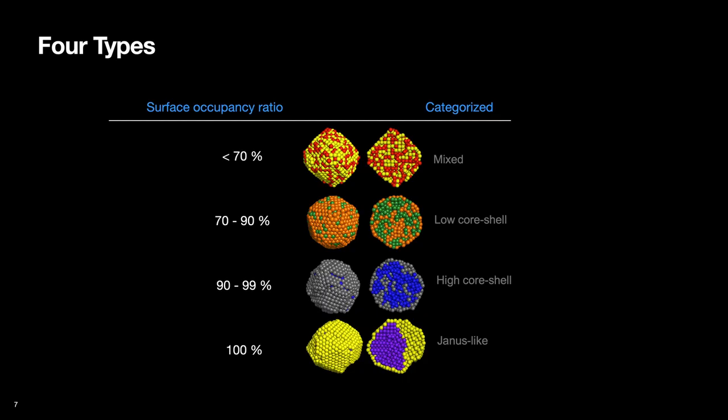And once we've done the analysis for the end result of each combination, we made our own criteria to categorize the structures. For example, when neither of the materials occupies more than 70% of the surface, we labeled them as a combination that prefers a mixed structure.